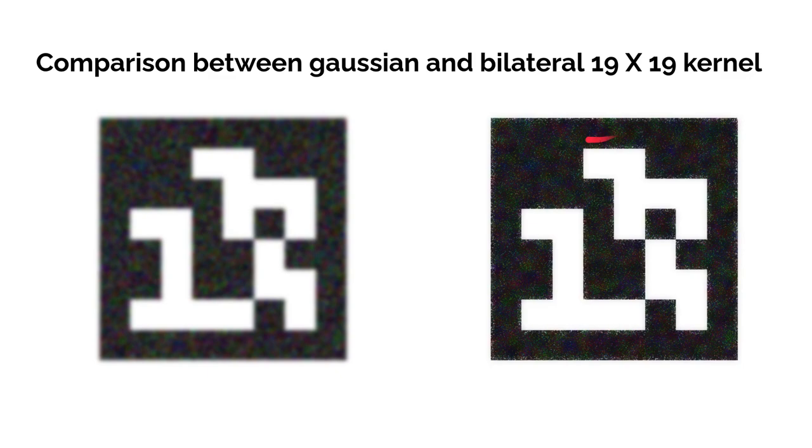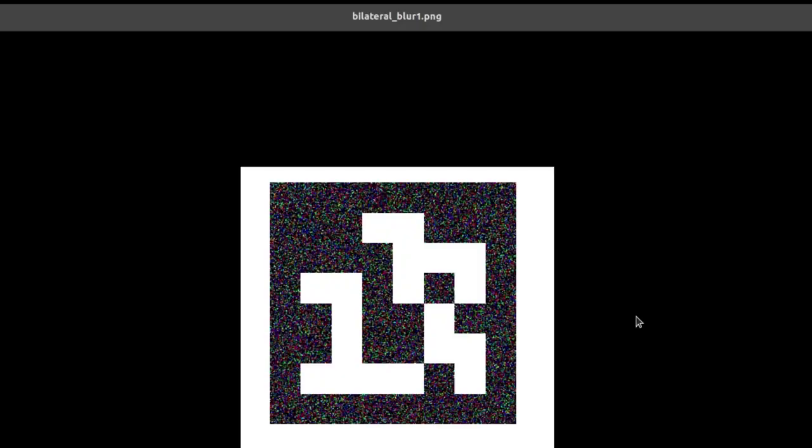And now if you see comparison between Gaussian and bilateral filter of same size, you see the noise reduction is similar but blurring of edge is a lot in Gaussian than the bilateral filter.